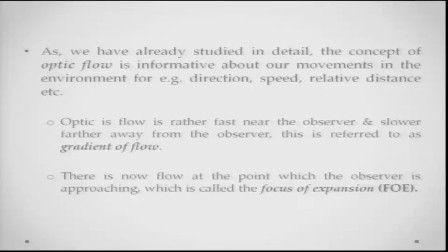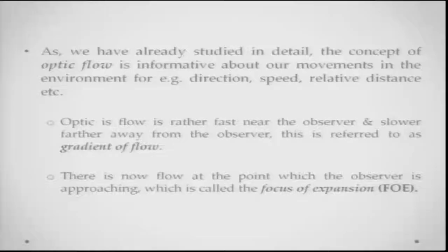A very important concept in Gibson's approach was optic flow — the information about our movements in the environment. For example, in the moving train example, a driver looks out and sees cows grazing in a field; the movement of the train affects the perception of those cows. Direction of movement, speed of movement, and relative distance between moving objects are prominent sources of information. Optic flow is fast near the observer and becomes slower further away — this difference is called the gradient of flow.